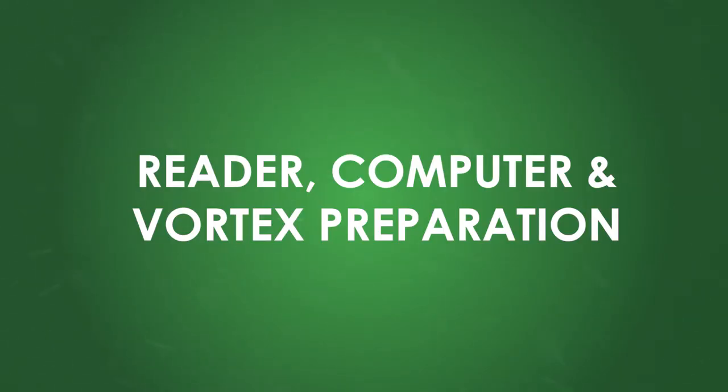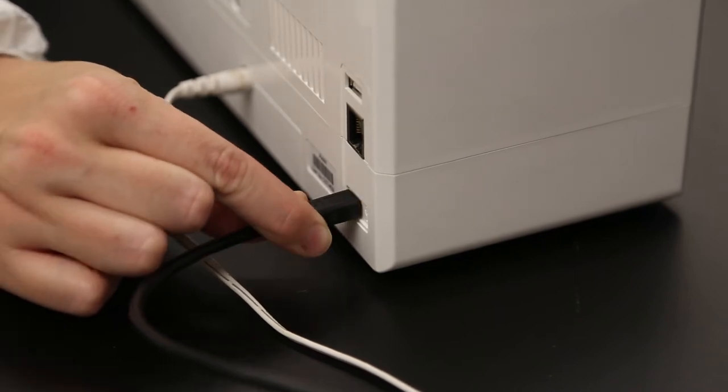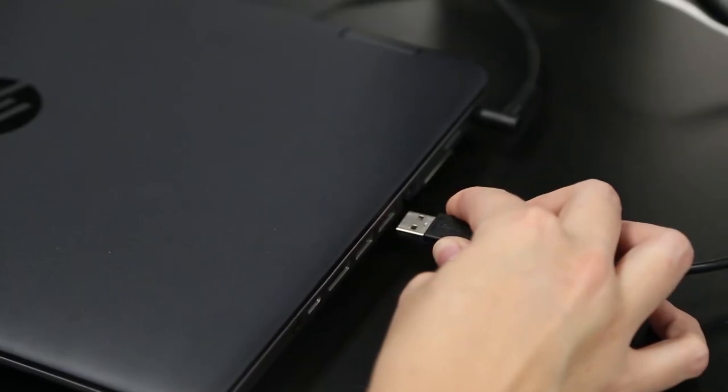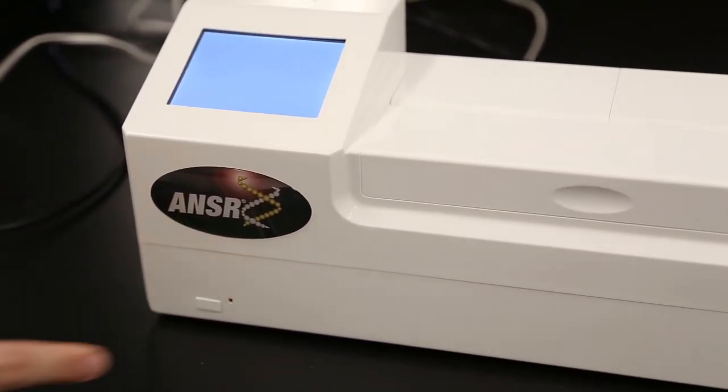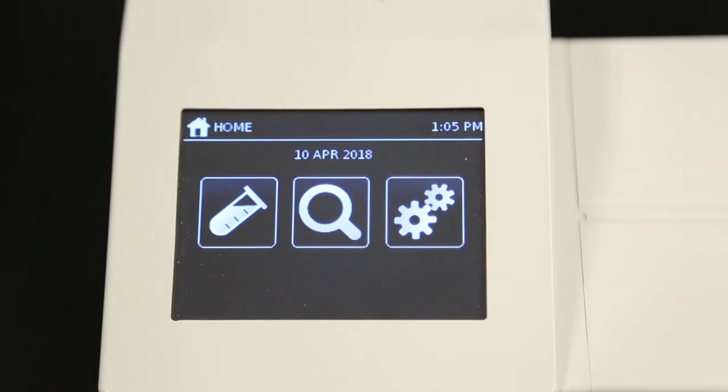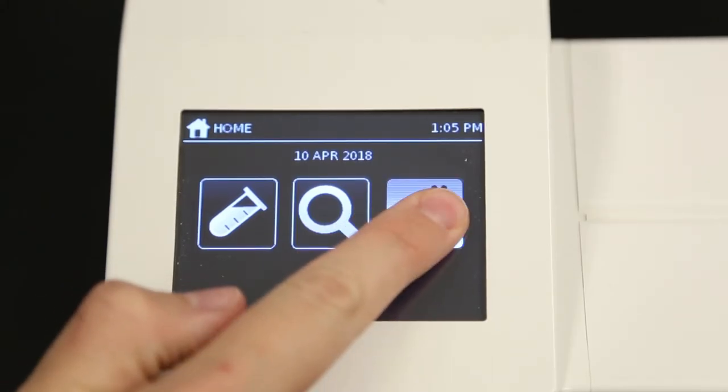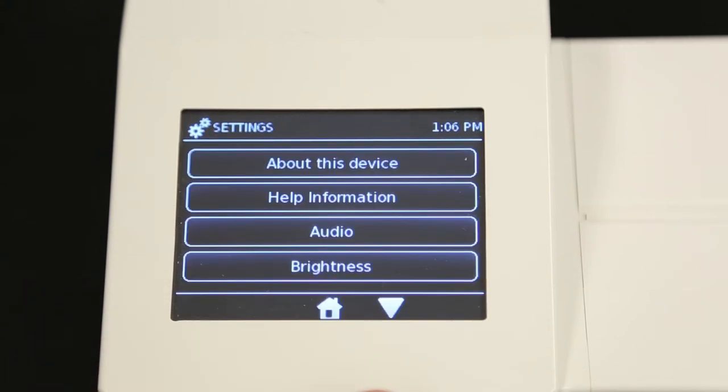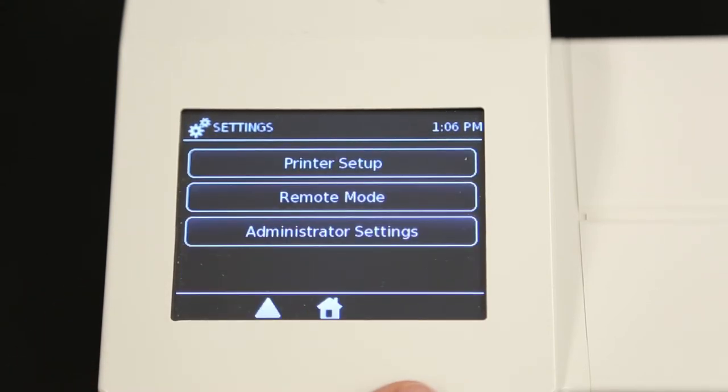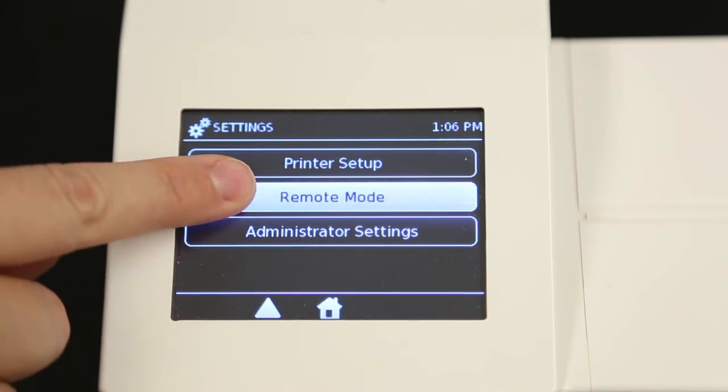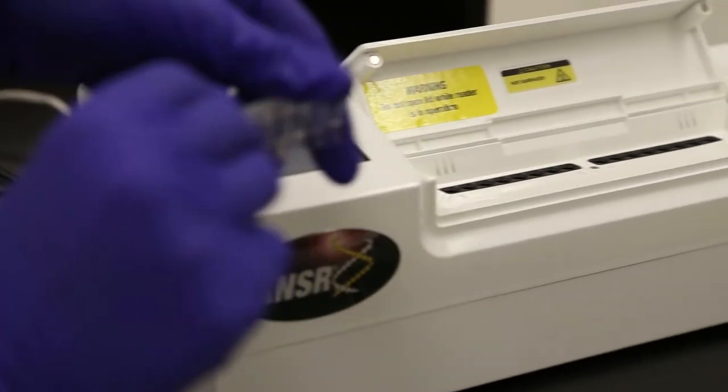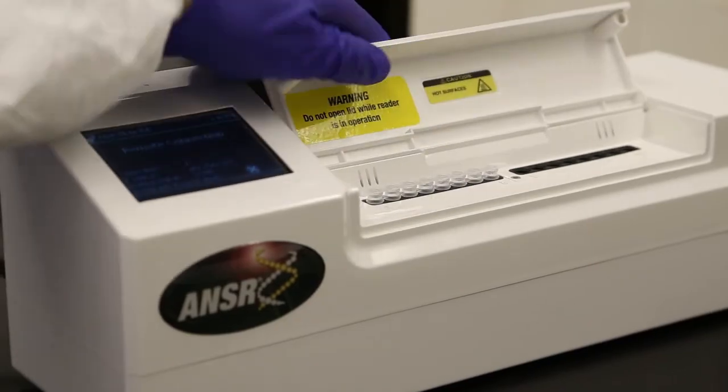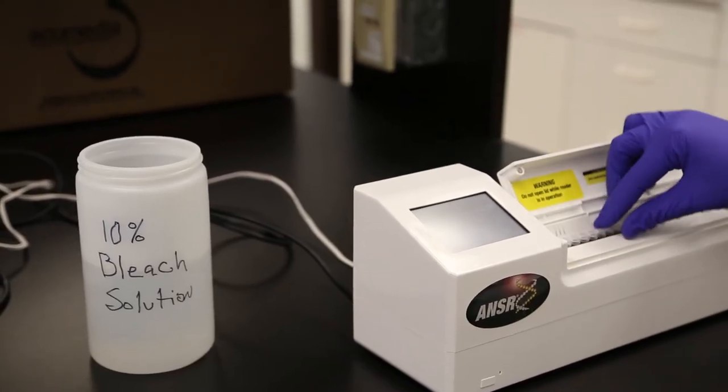Reader, computer, and vortex preparation. Make sure the answer reader and provided laptop are plugged in, and the connector between the reader and laptop is secure. Turn on the answer unit by holding the button on the front just for a moment. It takes the unit about a minute to load the software for use. The first time you use the reader, you need to select the third box on the touch display with the gears. Then press the down arrow once at the bottom of the screen. From here, select Remote Mode, which is the second box down. The screen will say Remote Connection. Note, the reader's lid should remain closed except for placing reaction tubes in or taking them out of the reader.